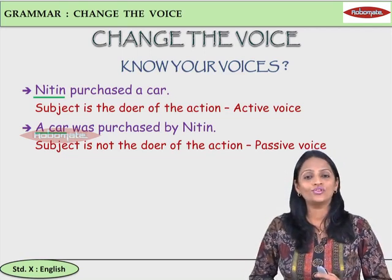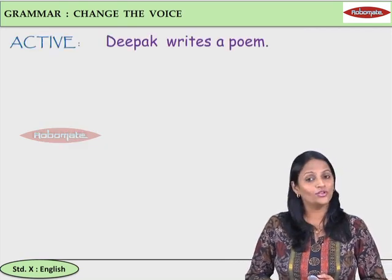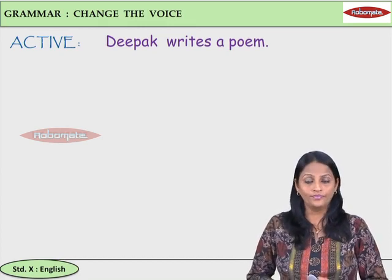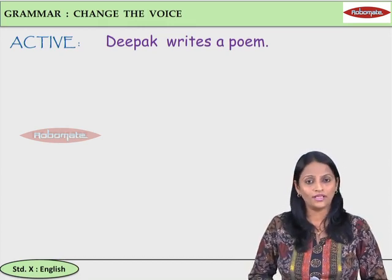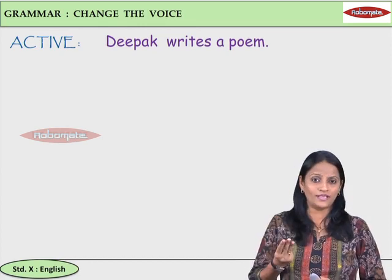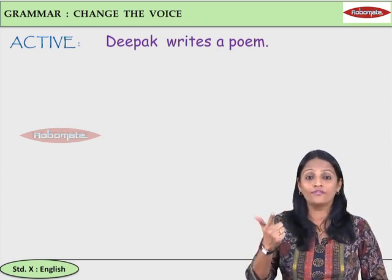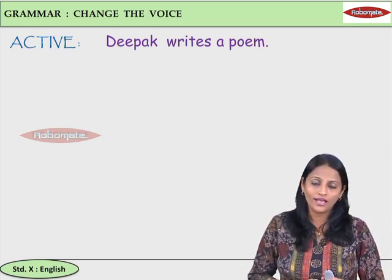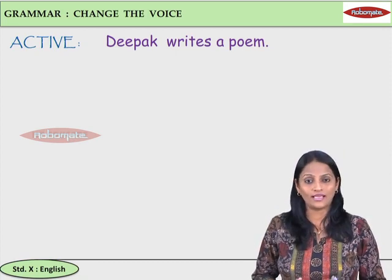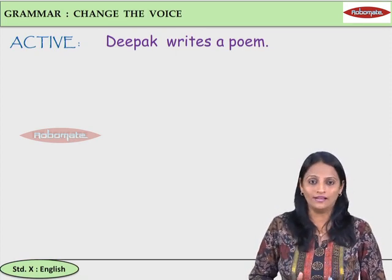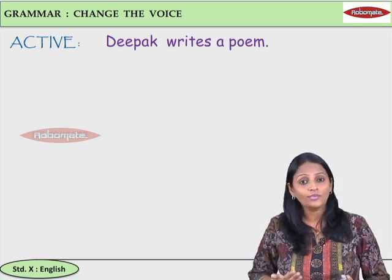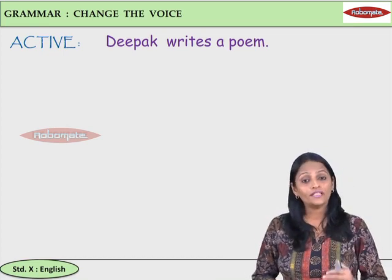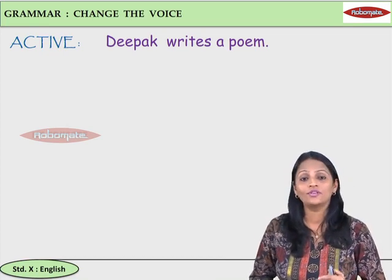Now, we go on to changing from active to passive. Let us start. Consider this sentence: 'Deepak writes a poem.' To make this active to passive, we need to identify just three things: what is the subject, which is the verb, and which is the object. Subject, verb, object — this is the key.